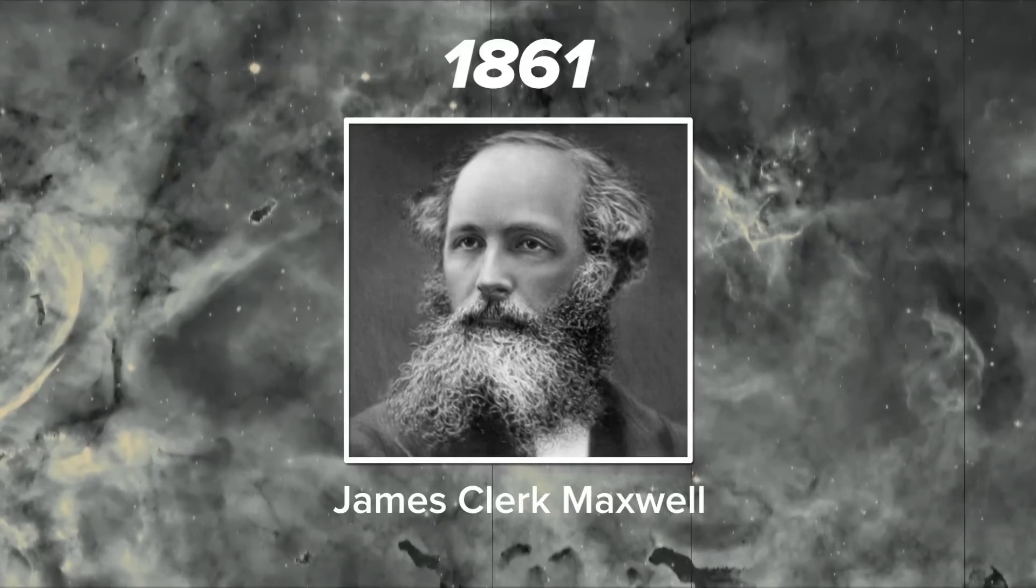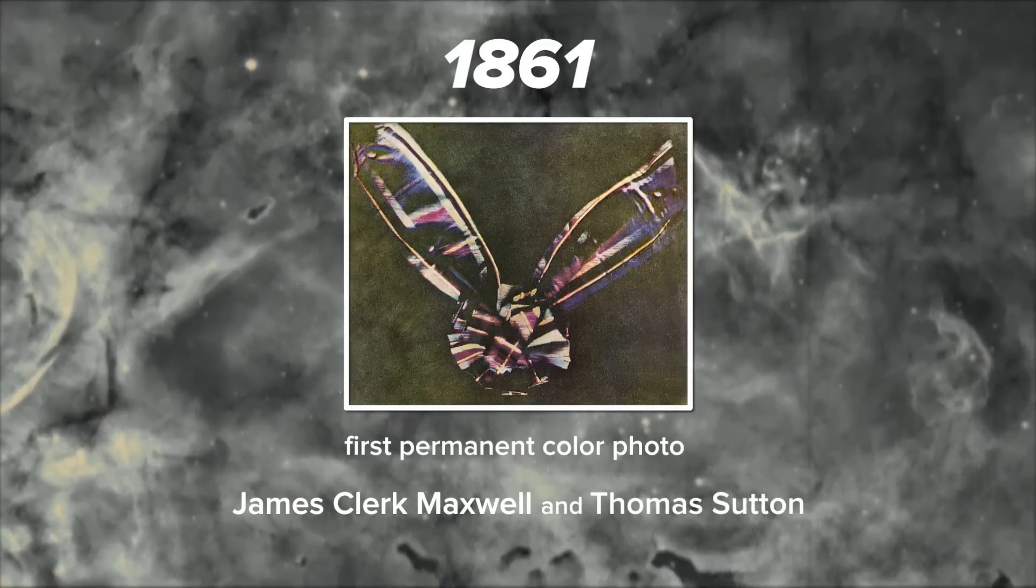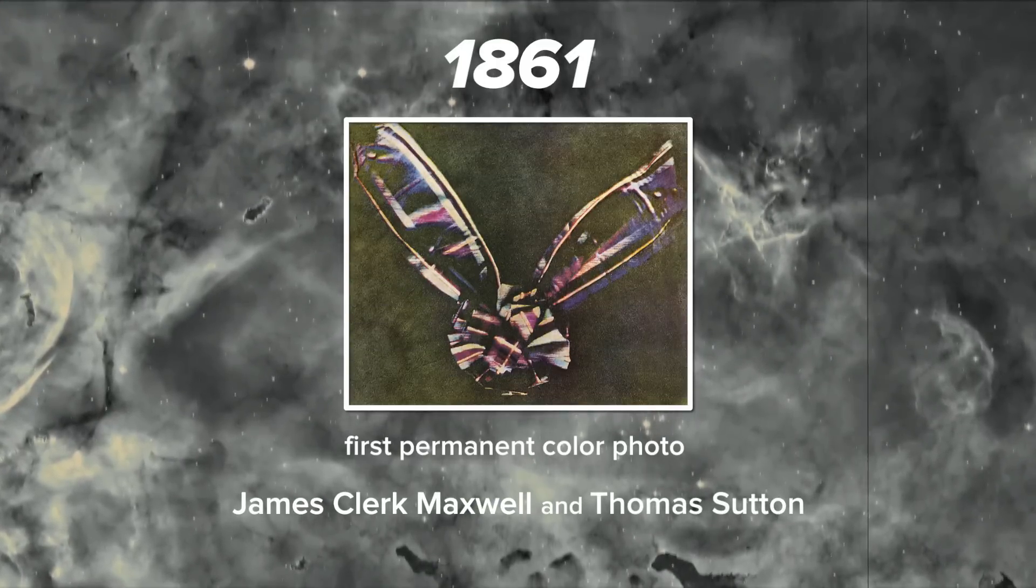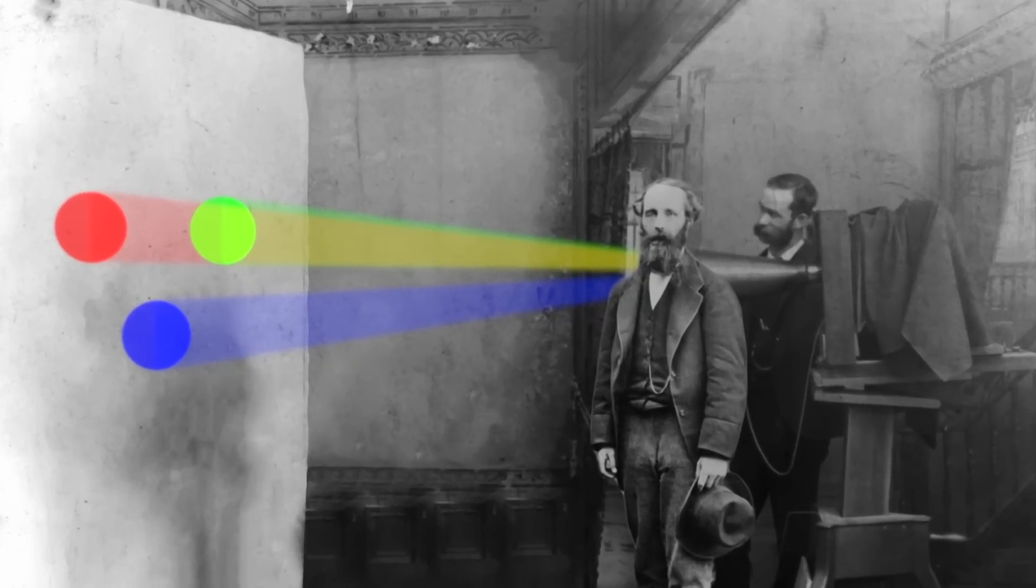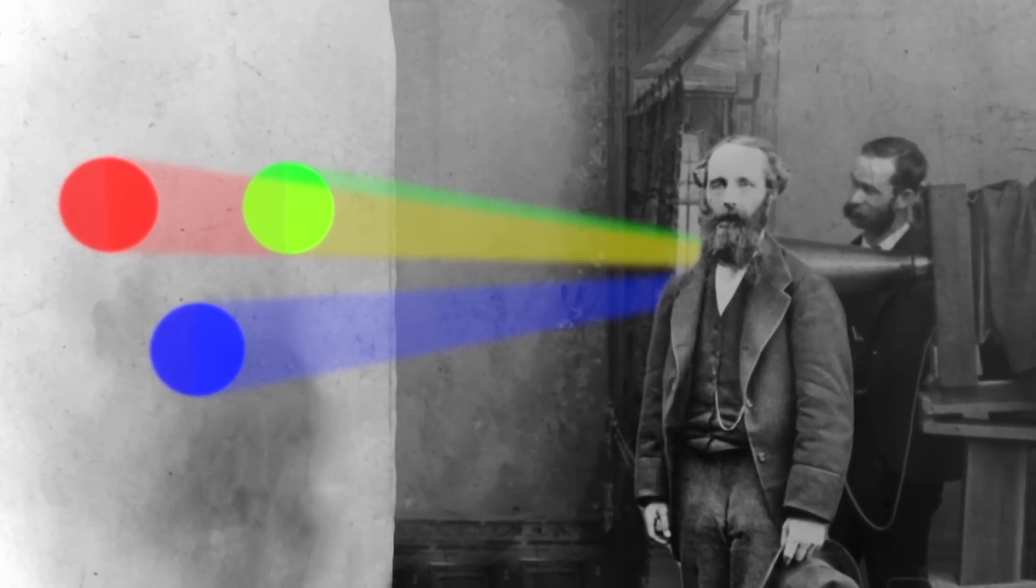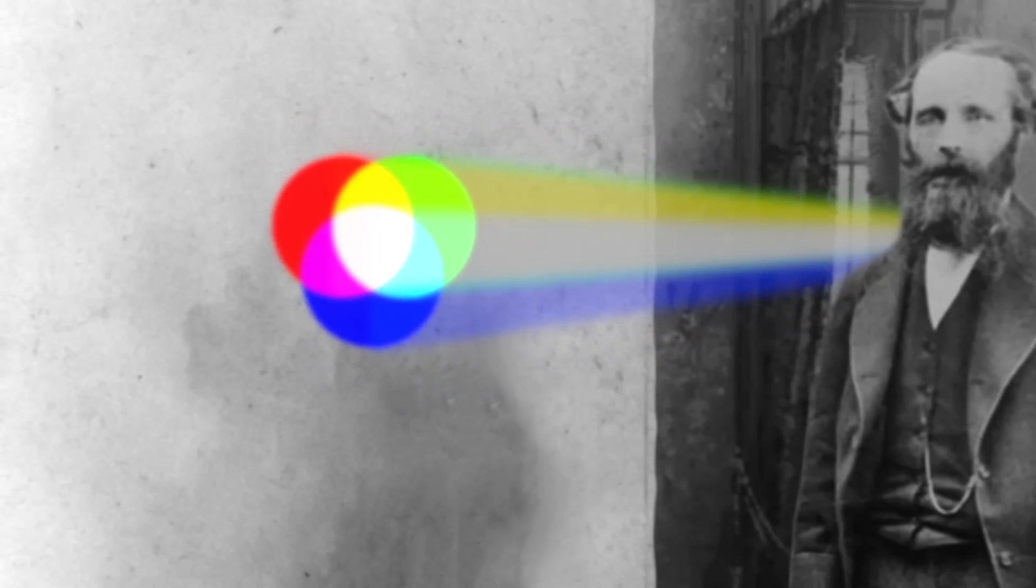Luckily, there is historical precedent for such a thing. In 1861, legendary physicist James Clark Maxwell was working with a photographer by the name of Thomas Sutton. They were playing around with colors and light. They found that if they projected a red, blue, and green light on a wall, that the combined colors looked white.